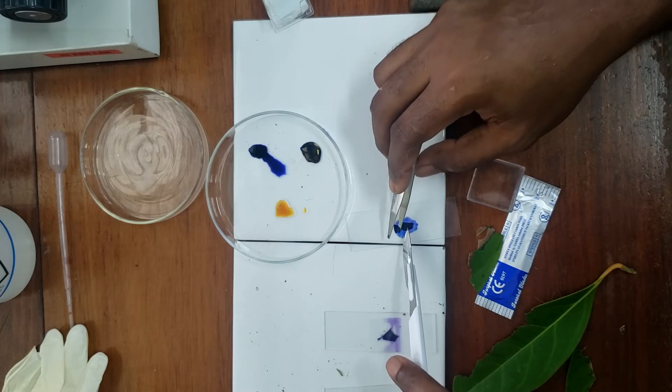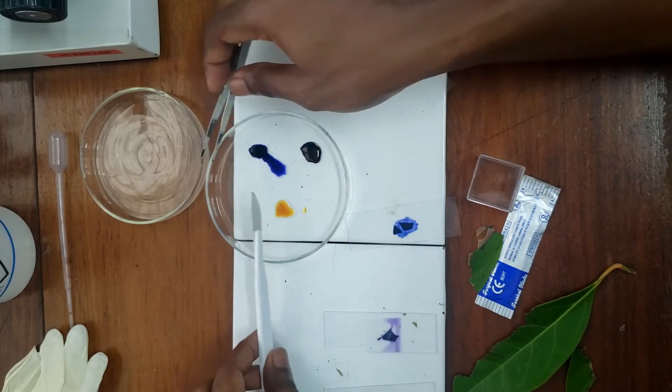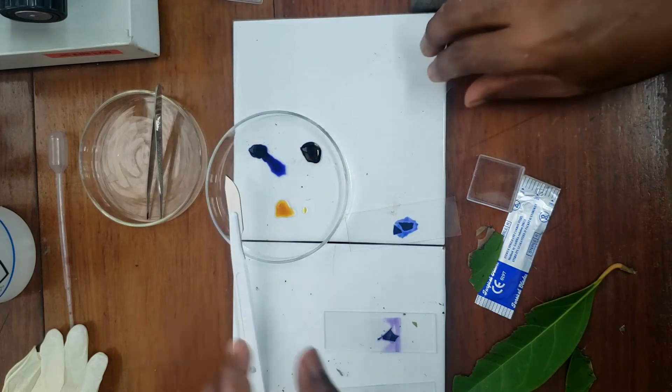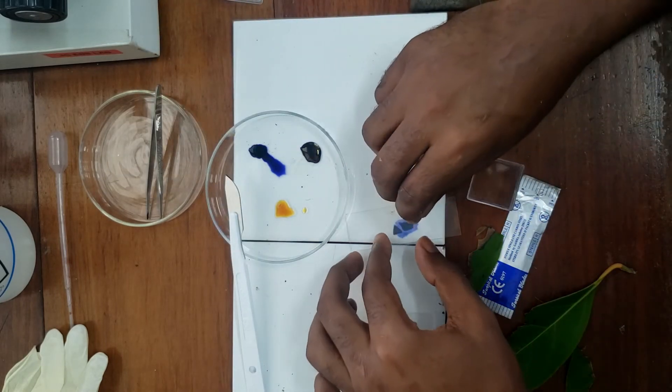And again, these segments have to be thin enough for light to pass through when you're viewing under the microscope.